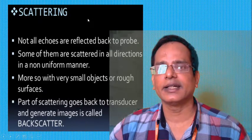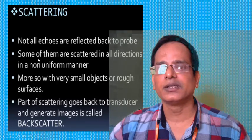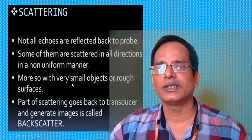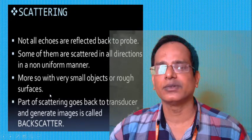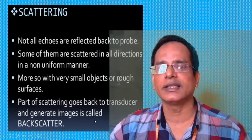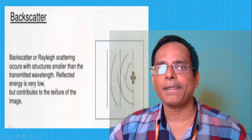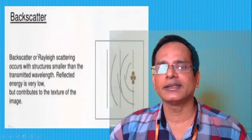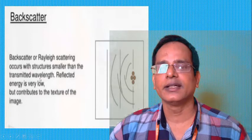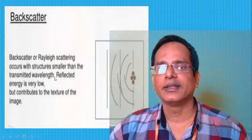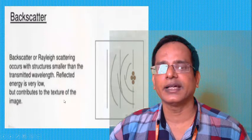The fourth tissue reaction is scattering. Not all echoes are reflected back to the probe; some are scattered in all directions in a non-uniform manner, particularly from very small objects or rough surfaces. The portion of scattering that returns to the transducer generates an image called backscatter. Backscatter, or Rayleigh scattering, occurs with structures smaller than the transmitted wavelength, and the reflected energy is very low but contributes to the texture of the image.